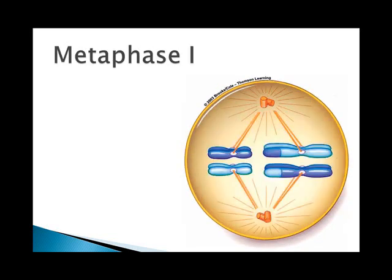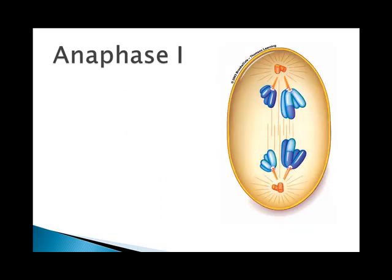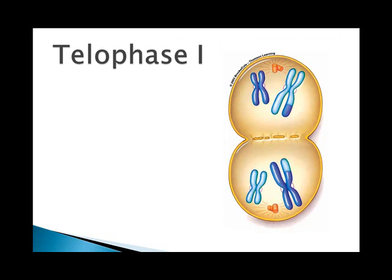In metaphase one, the tetrads line up at the center of the cell. The tetrads split and move in opposite directions during anaphase one. And during this phase, the sister chromatids move away from the other homologous set. After telophase one, two cells form and each contains a complete set of chromosomes in the form of chromatid pairs.